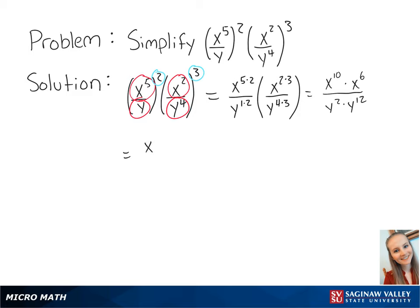This leaves us with x to the 10th plus 6 over y to the 2 plus 12. This expression finally gives us x to the 16th over y to the 14th. This is the final answer.